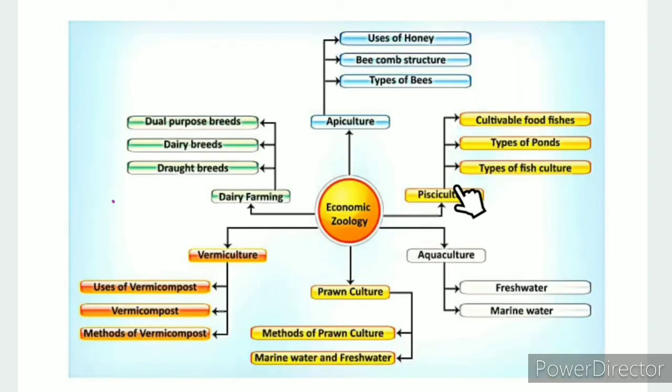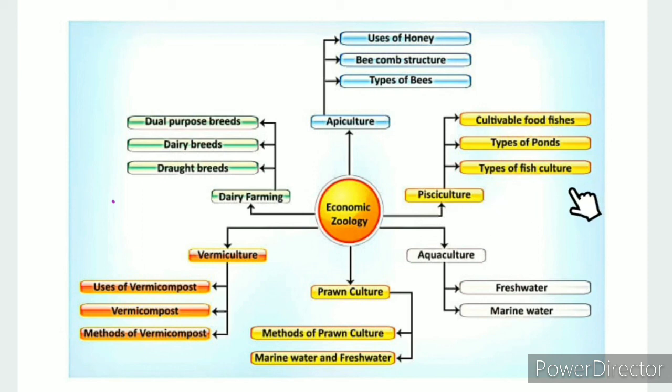To summarize: fish culture or pisciculture involves types of fish culture including extensive fish culture, intensive fish culture, monoculture, polyculture, and integrated fish farming.